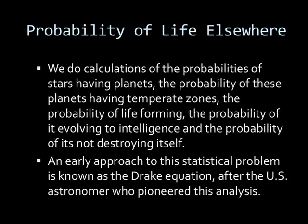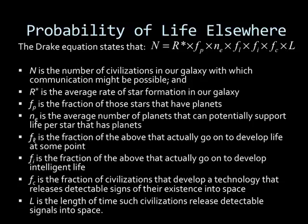What we can do is make estimates of the number of planets that might exist in the galaxy. We do calculations of the probabilities of stars having planets, the probabilities of these planets having temperate zones, the probability of life forming, the probability of it evolving to intelligence, and the probability of it not destroying itself. An early approach to this statistical problem is known as the Drake Equation, after the U.S. astronomer who pioneered the analysis.